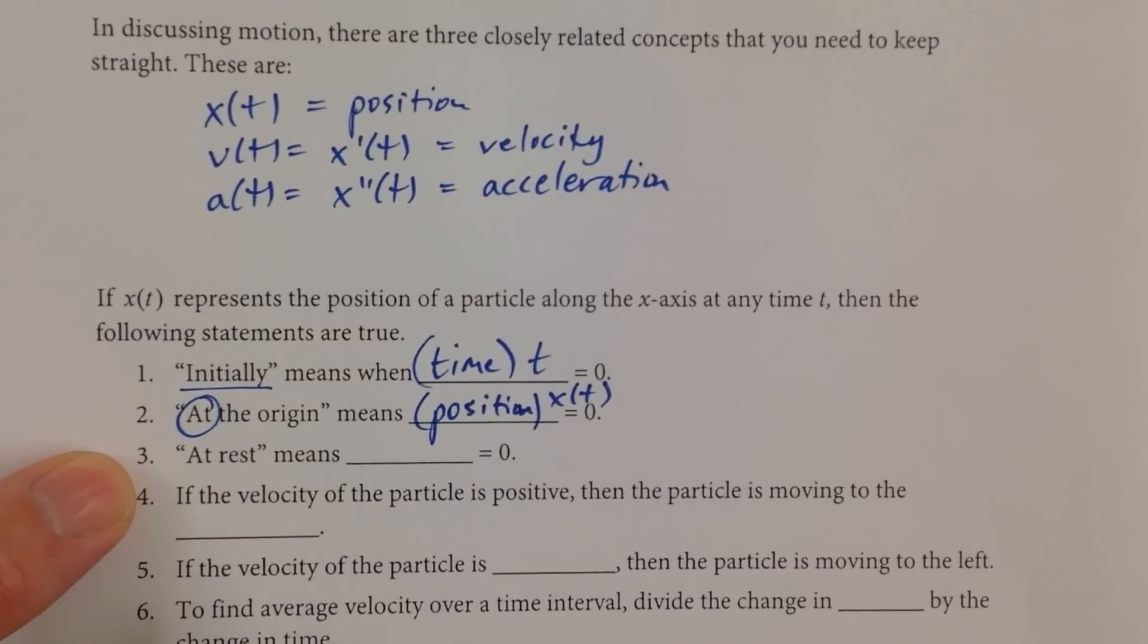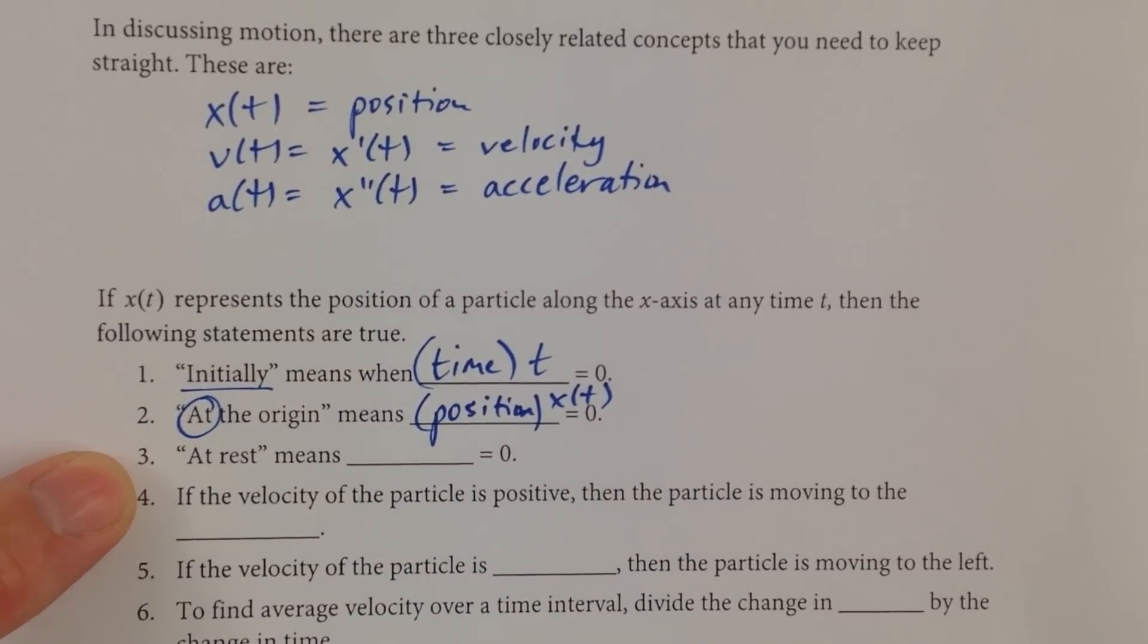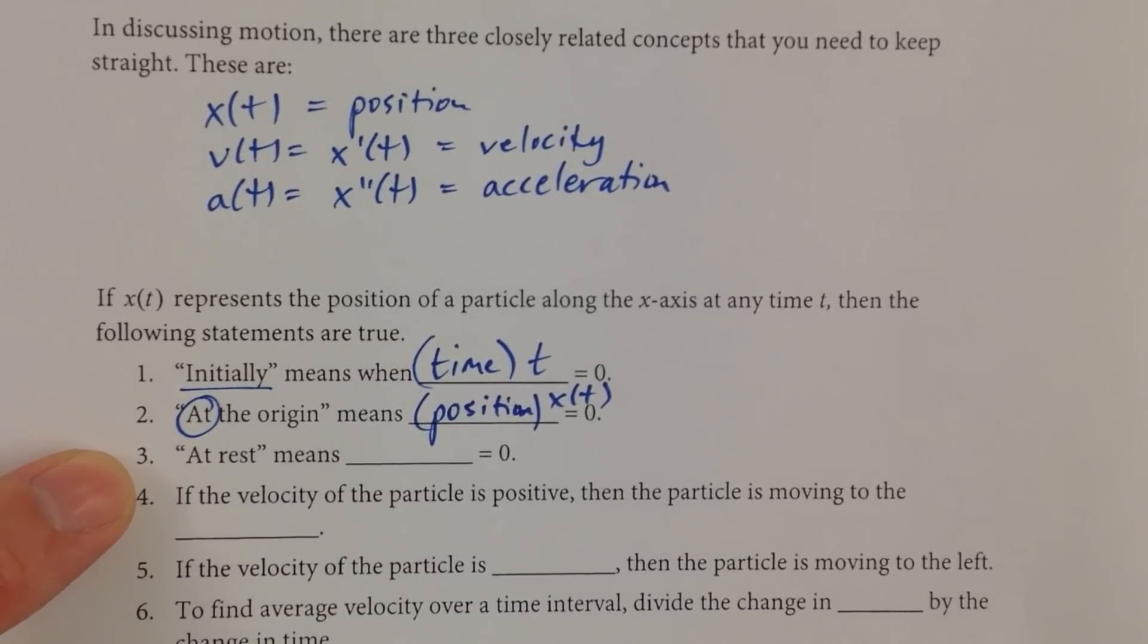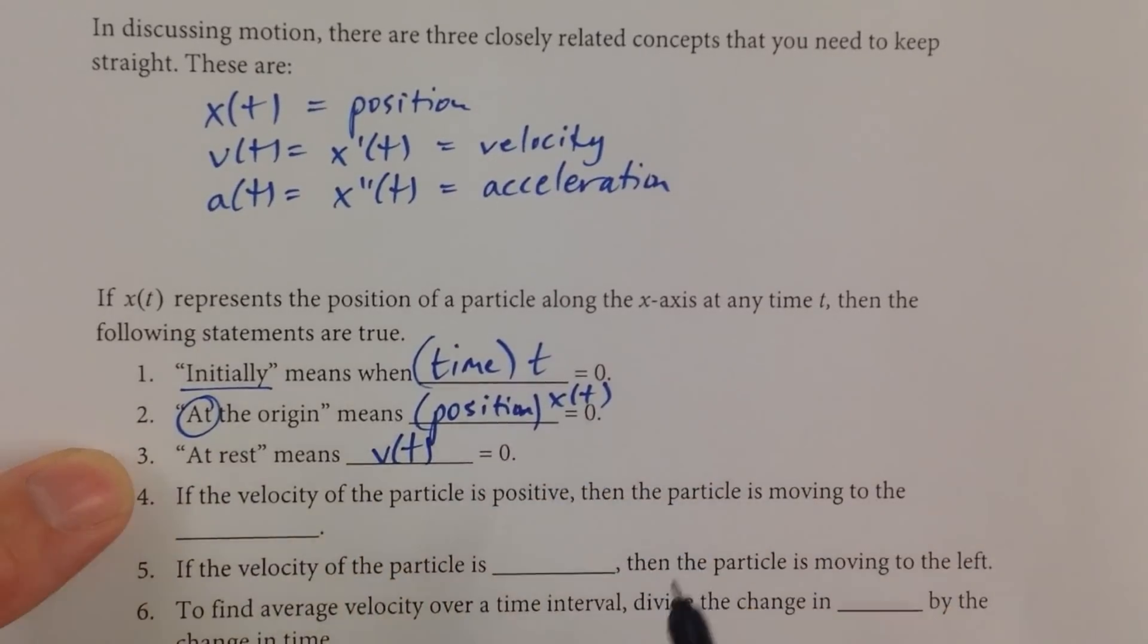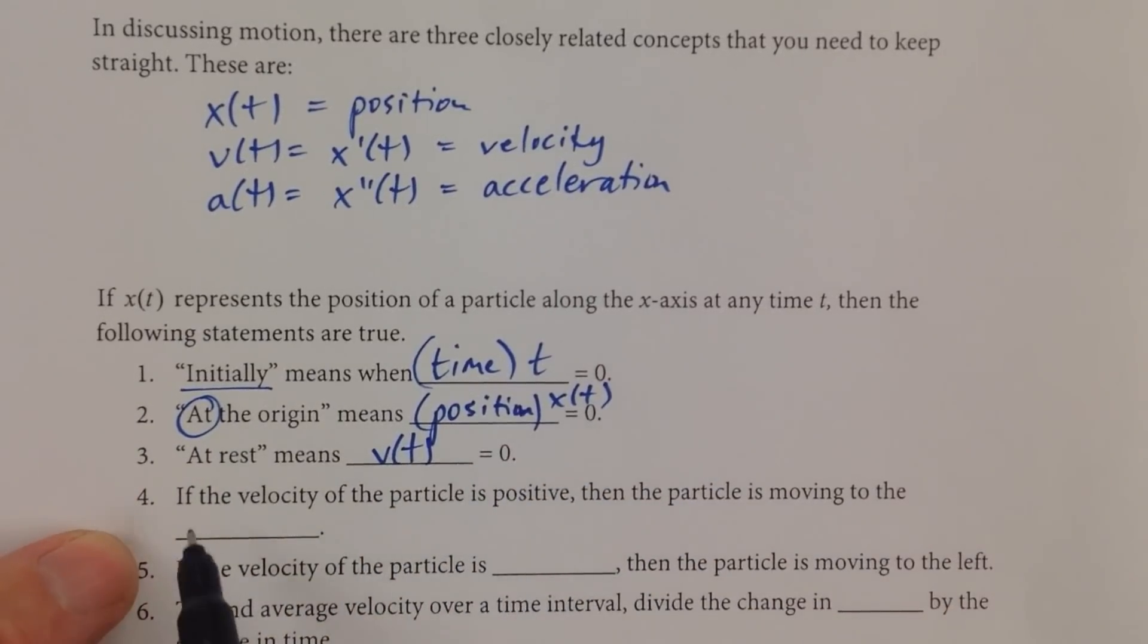Now, at rest. Well, at rest means what? Could be at rest anywhere. So that's not position. At rest would mean you're not moving. And if you're not moving, then your velocity, v(t), is going to be equal to zero.